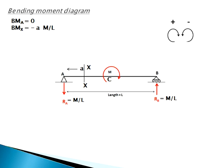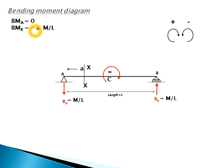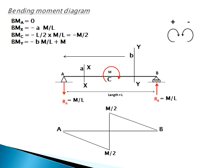Now we draw the bending moment diagram, which is a little tricky. Bending moment at A = 0. Consider a point X at distance 'a' from A — the reaction force Ra creates an anticlockwise effect at X, so bending moment at X = −a·(M/L). Now consider a point Y at distance 'b' from A.